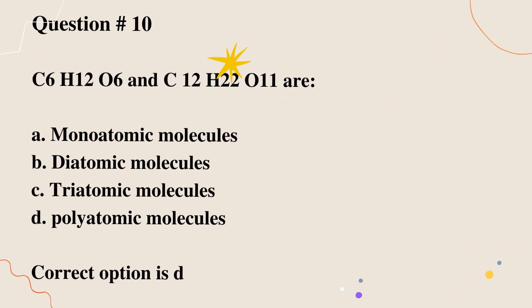Question number 10. C6H12O6 and C12H22O11 are: A. Monoatomic molecules. B. Diatomic molecules. C. Triatomic molecules. D. Polyatomic molecules. Correct option is D.